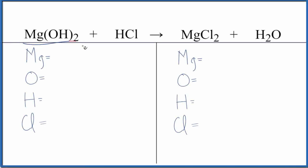Let's balance the equation for Mg(OH)₂ plus HCl, magnesium hydroxide plus hydrochloric acid. We'll also look at the type of reaction and write the states.